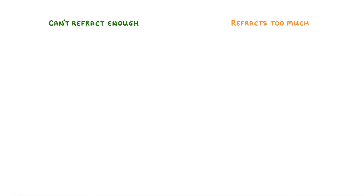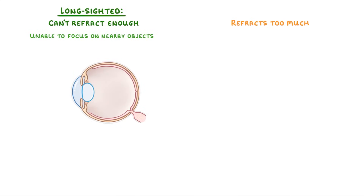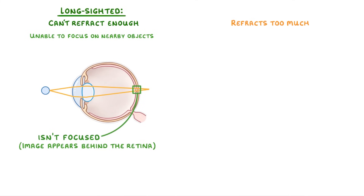The next thing we need to look at is what happens when the lens either can't refract enough, or refracts too much. The first of these results in people being long-sighted, which means that they can see long distances fine, but are unable to focus on nearby objects. Because the lens can't refract enough, the light still isn't focused by the time it hits the retina — or theoretically, the image appears behind the retina — which means that the object appears blurry. To fix this problem, we use glasses that contain convex lenses, which help by providing some extra refracting power, so that the eye is then able to focus the light onto the retina properly.